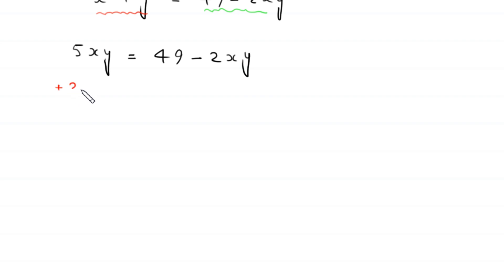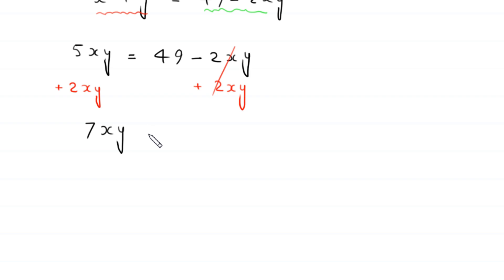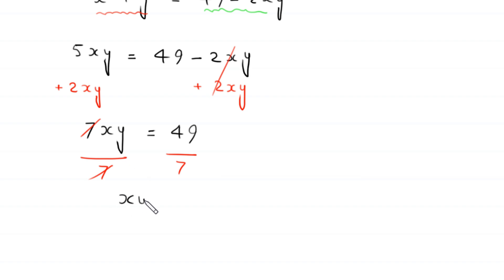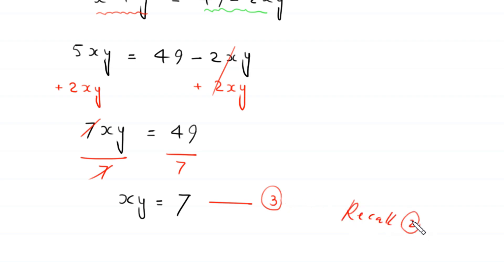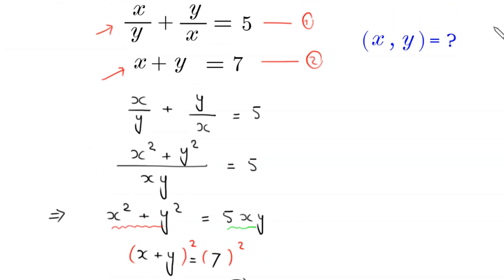Adding 2xy to both sides: 5xy plus 2xy gives 7xy equals 49. Dividing both sides by 7, we get xy equals 7. We call this Equation 3.